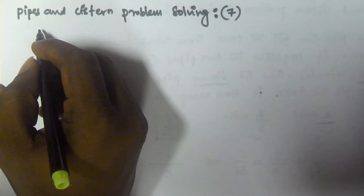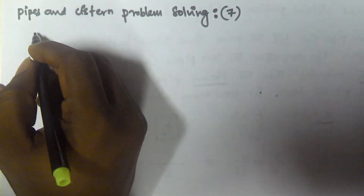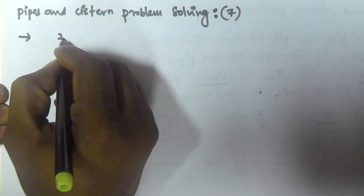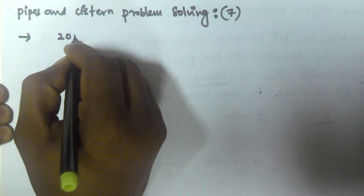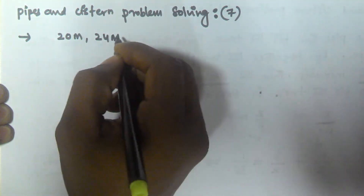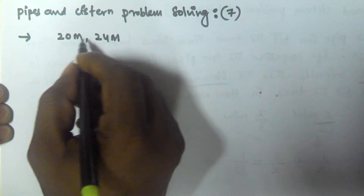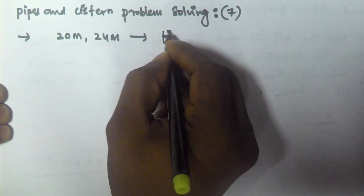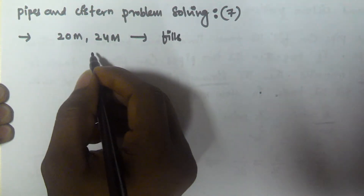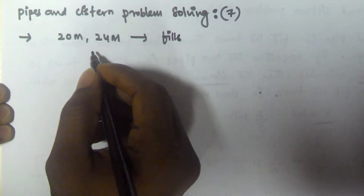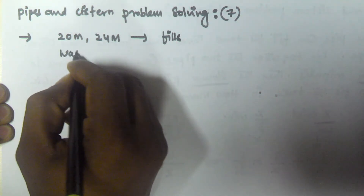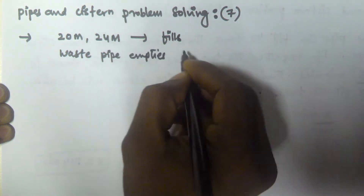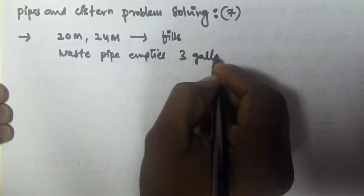Hello friends, in this video we will see a problem related to pipes and cisterns. Consider two pipes that can fill a tank in 20 minutes and 24 minutes respectively. There is also a waste pipe connected that empties 3 gallons per minute.